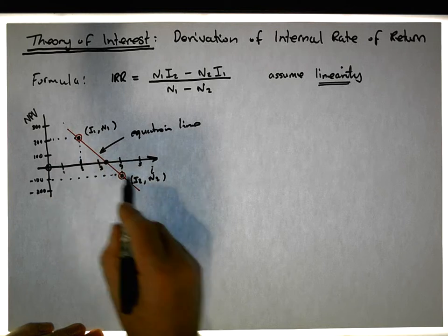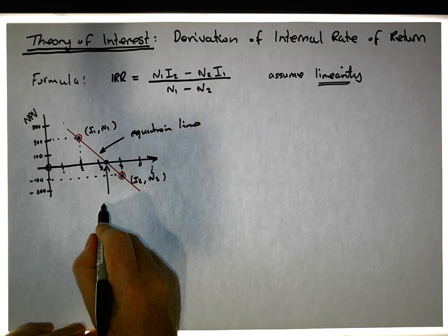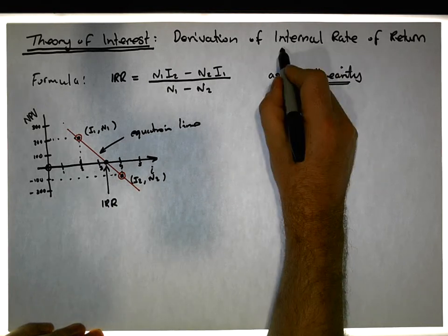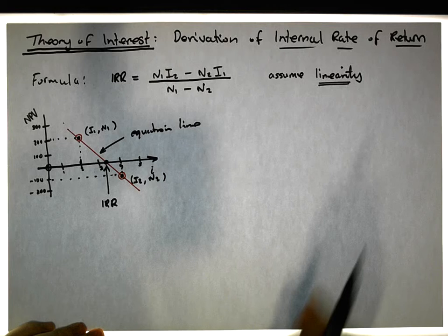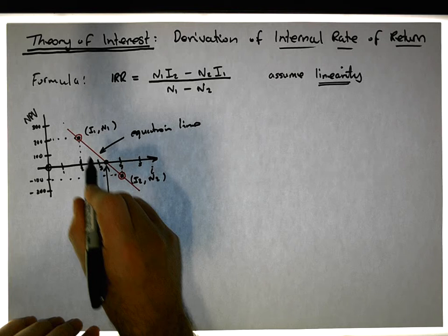And this thing here is called the internal rate of return or the IRR for the project. So we need to figure out how to get this formula, and it's actually straightforward enough. We need two things from coordinate geometry.